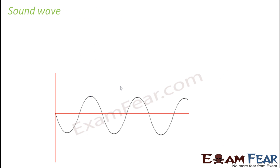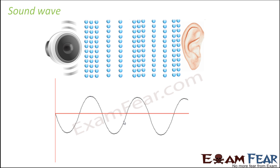Before we talk about each characteristic of a sound wave, let us quickly recall how exactly sound waves are formed and why we call it a wave. So whenever we say a wave, this is what comes to our mind. If this is the source of sound and this is the human ear receiving the sound, how are these sound waves traveling in the form of disturbance in between?